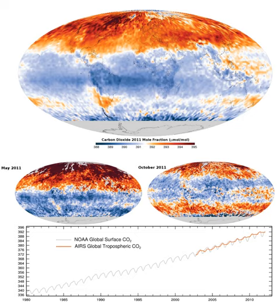Burning fossil fuels such as coal, petroleum, and natural gas is the leading cause of increased anthropogenic CO2. Deforestation is the second major cause. In 2010, 9.14 gigatons of carbon (GtC), equivalent to 33.5 gigatons of CO2 or about 4.3 ppm in Earth's atmosphere, were released from fossil fuels and cement production worldwide, compared to 6.15 GtC in 1990. In addition, land use change contributed 0.87 GtC in 2010, compared to 1.45 GtC in 1990.